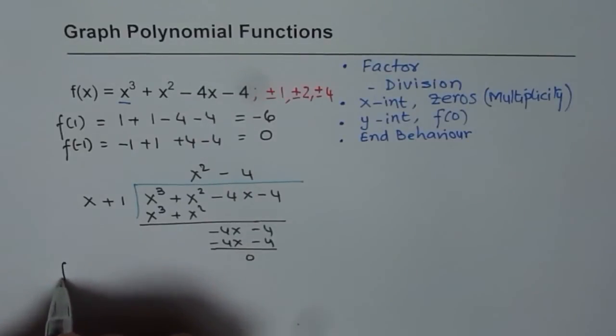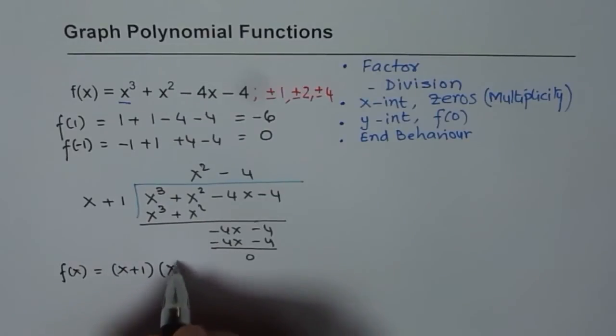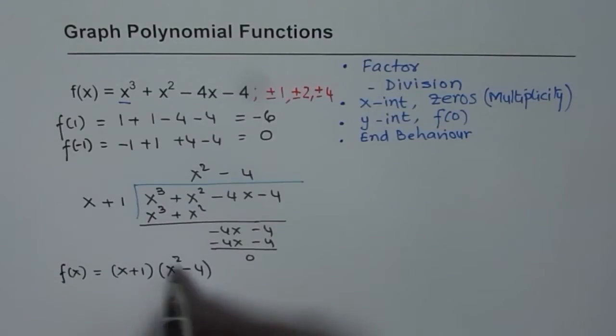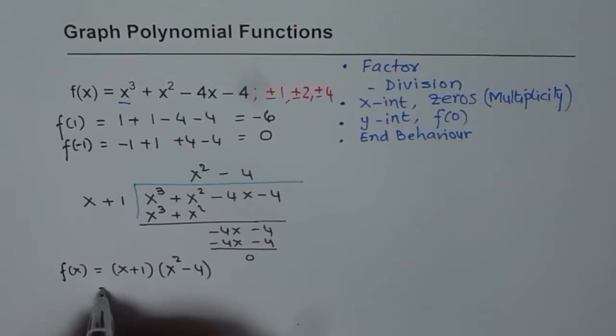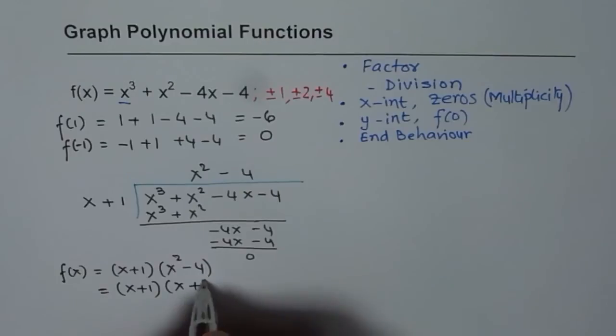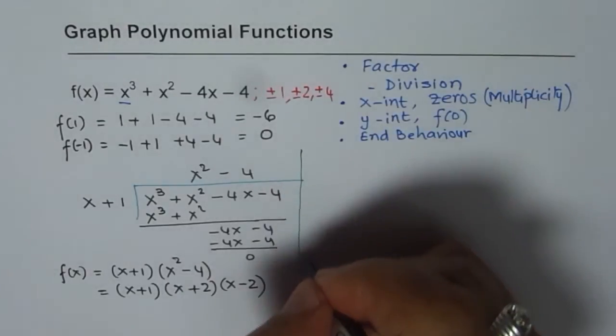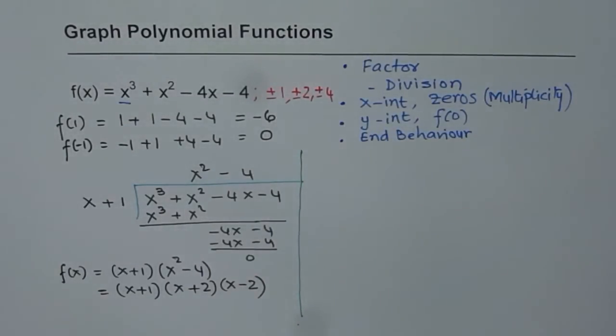So we can write our function f(x) as equal to (x + 1)(x² - 4). Now x² - 4 is difference of squares: (x + 2)(x - 2). So we can write this as (x + 1)(x + 2)(x - 2). So we get these three linear factors. Now we are in a position to sketch our graph.